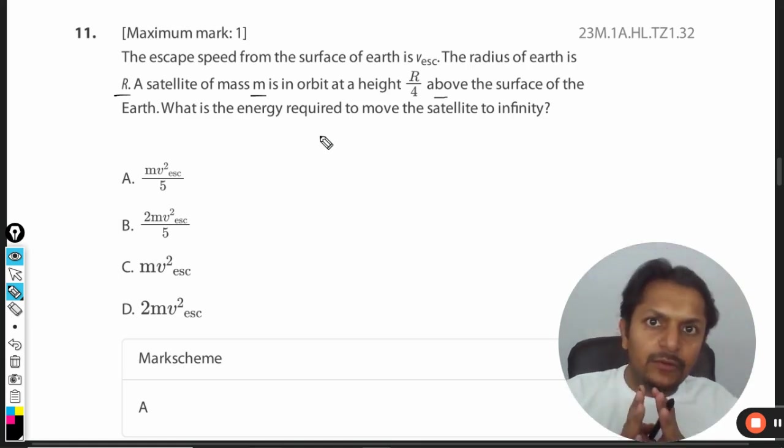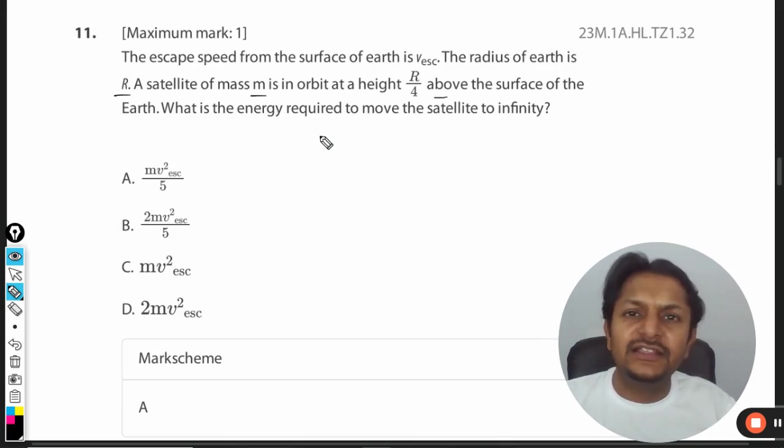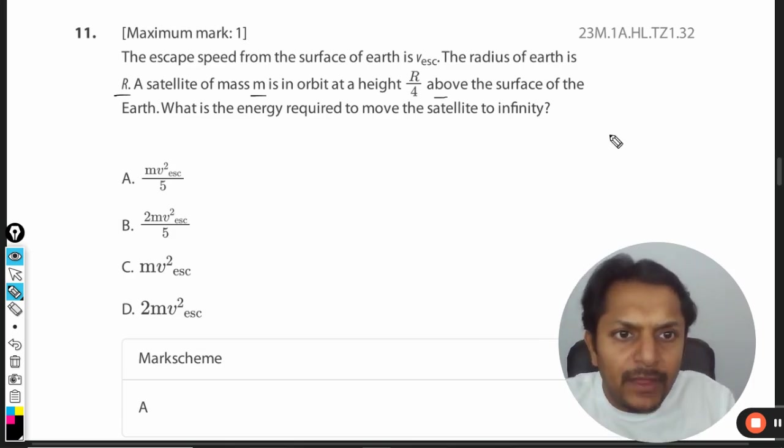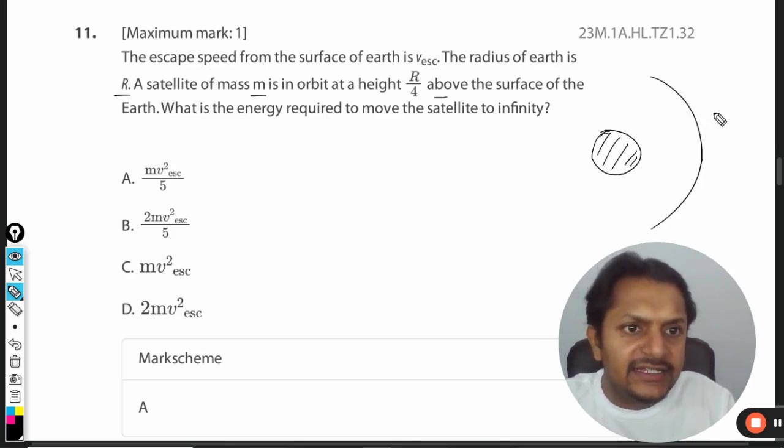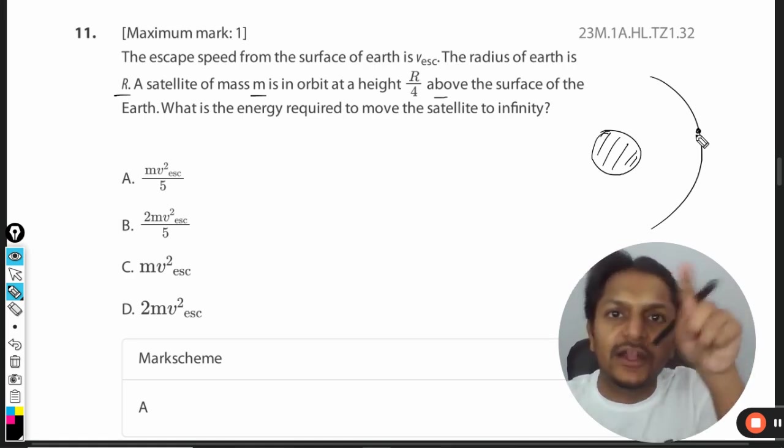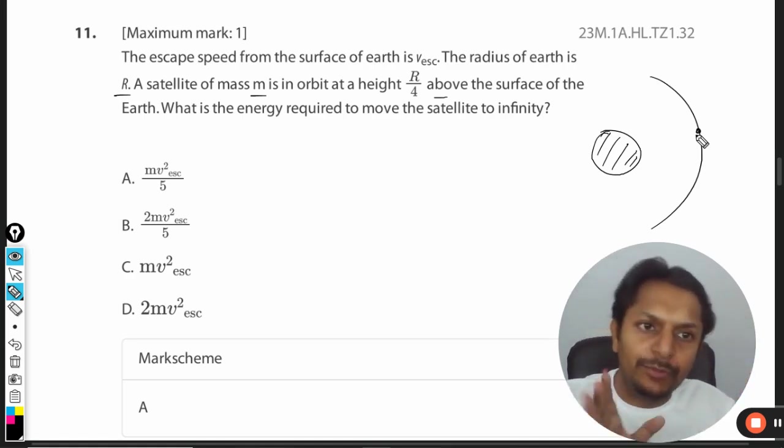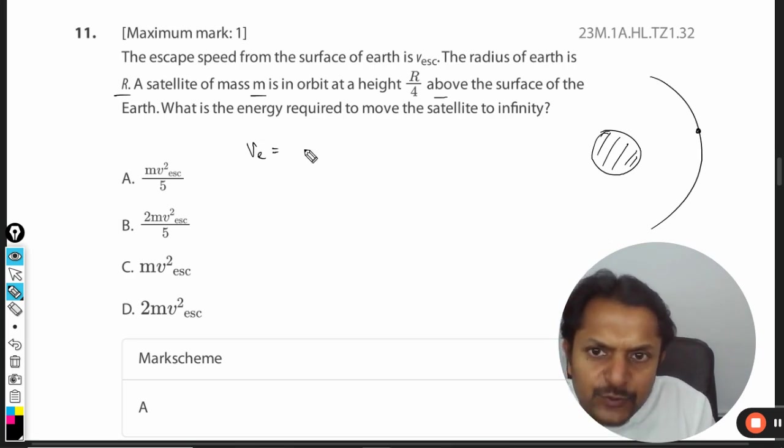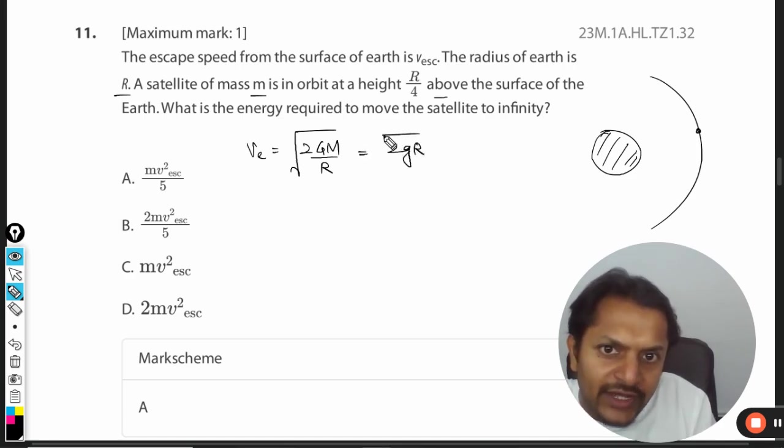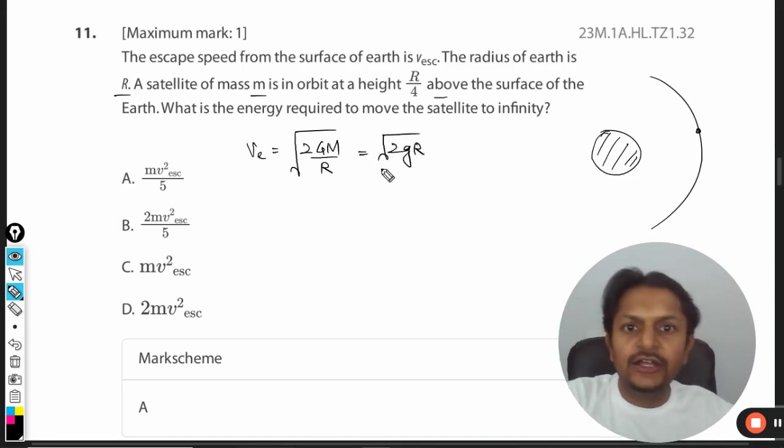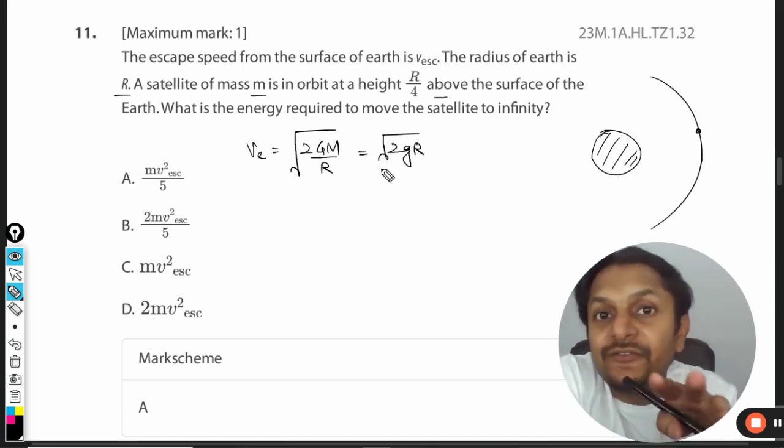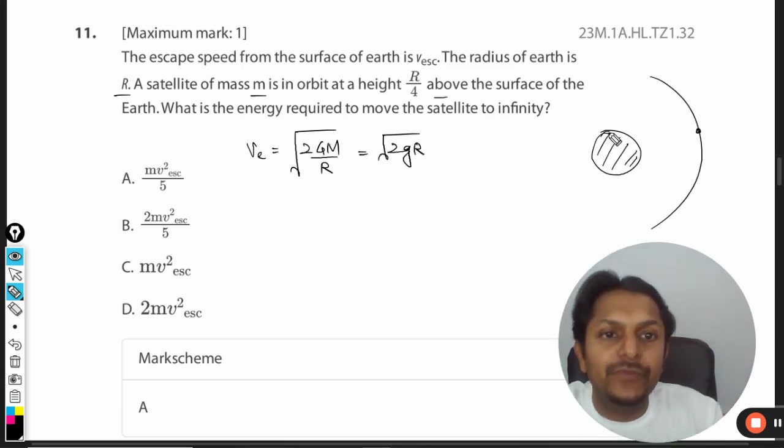There's a good concept involved here. This is a very good question, so be careful. See, this is the planet and this is the orbit in which the satellite is already moving around Earth. We have a formula for escape speed: v_e = √(2GM/R), which is often written as √(2gR).